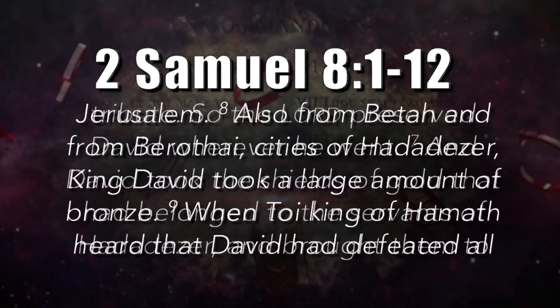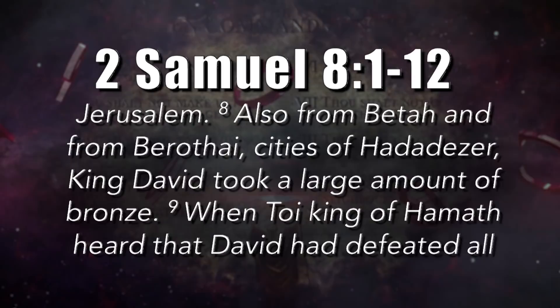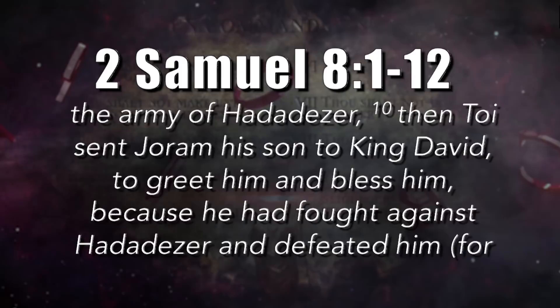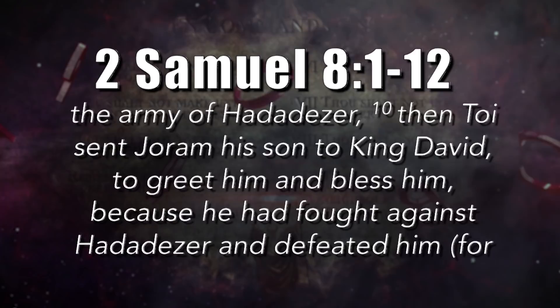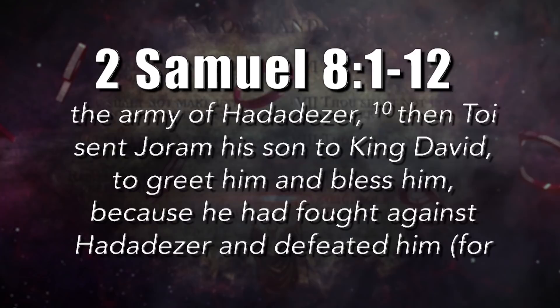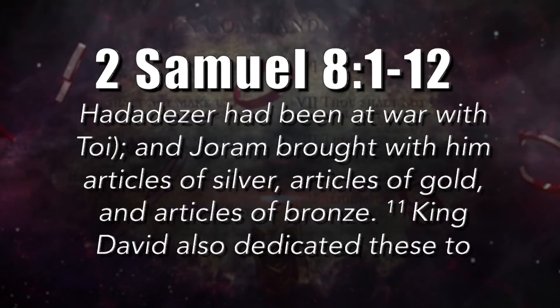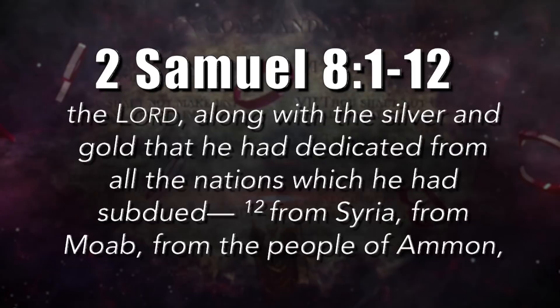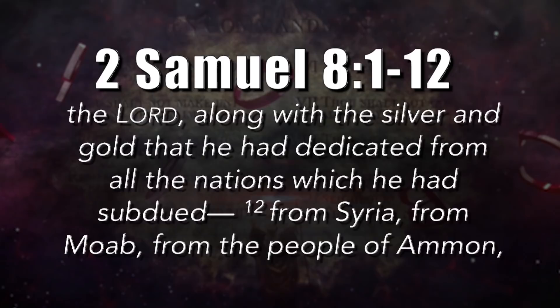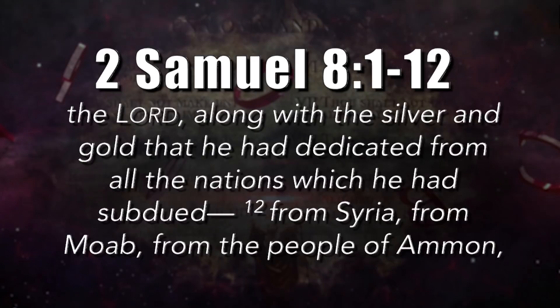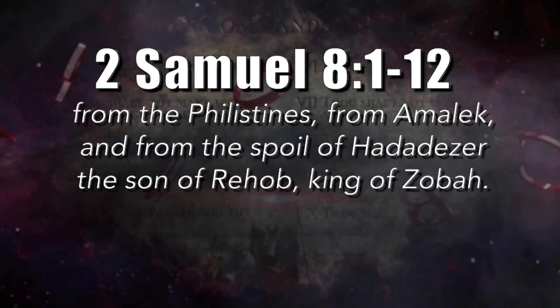Also from Betah and from Berothai, cities of Hadadezer, King David took a large amount of bronze. When Toi, king of Hamath, heard that David had defeated all the army of Hadadezer, Toi sent Joram his son to King David to greet him and bless him, because he had fought against Hadadezer and defeated him, for Hadadezer had been at war with Toi. And Joram brought with him articles of silver, articles of gold, and articles of bronze. King David also dedicated these to the Lord, along with the silver and gold he had dedicated from all the nations which he had subdued — from Syria, from Moab, from the people of Ammon, from the Philistines, from Amalek, and from the spoil of Hadadezer, the son of Rehob, the king of Zobah.